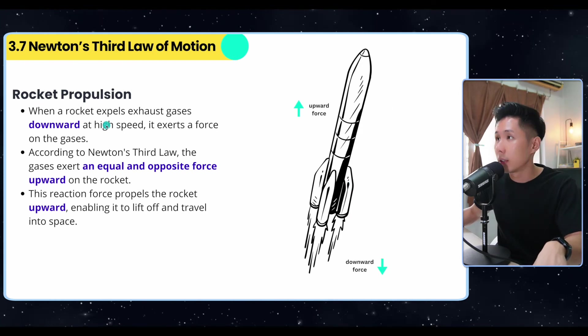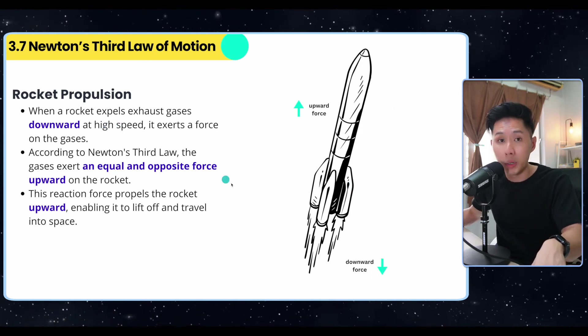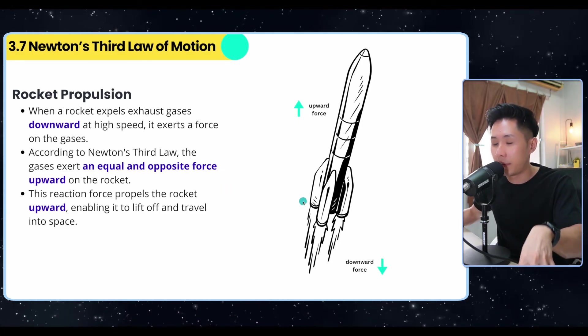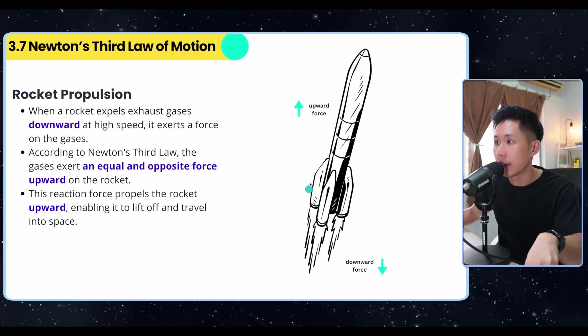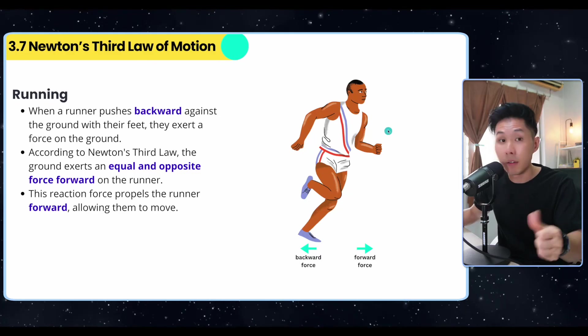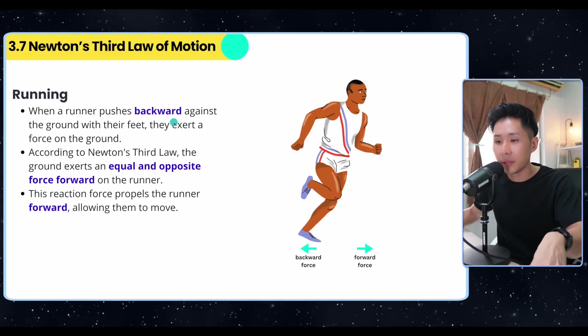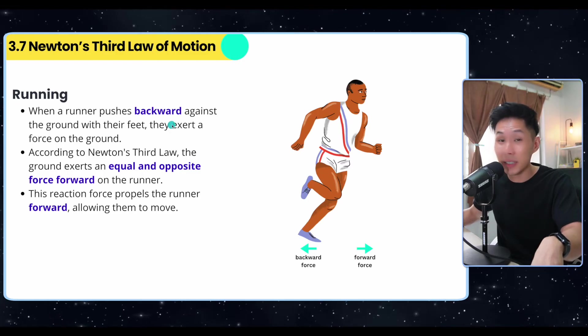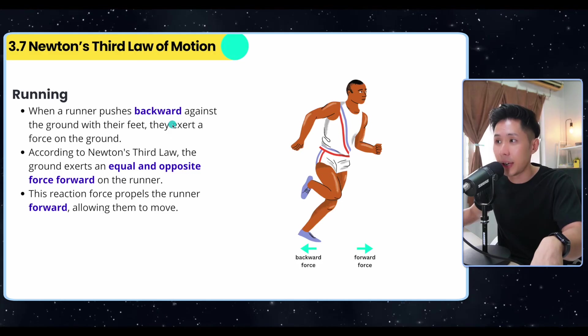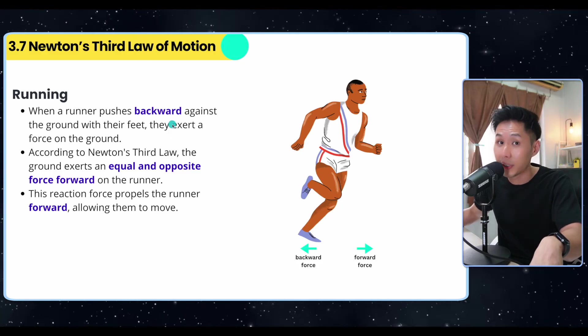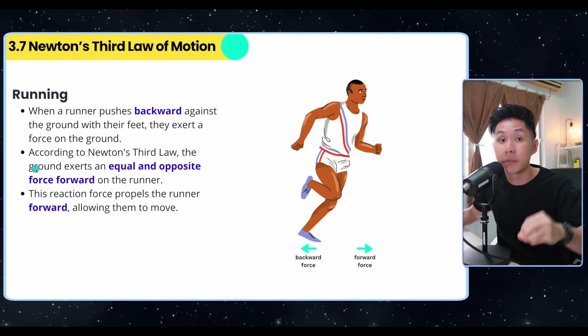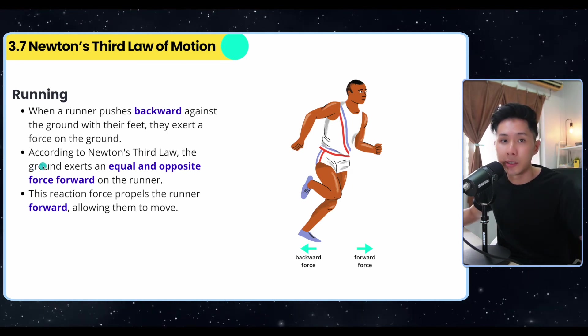Rocket propulsion: the rocket expels exhaust gases downward. Why downward? Because they're trying to create an equal amount of upward force that propels the rocket forward. This is Newton's third law in action. Last example: when you're running, your foot will have to step backwards. That's Newton's third law in motion. In order to create a forward force, you need to create an equal amount of backward force. As we go into chapter five on momentum, you will see Newton's third law surfacing again. But this is just an introduction.